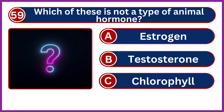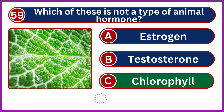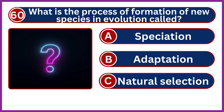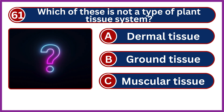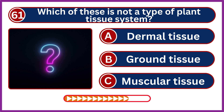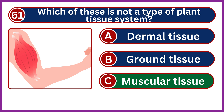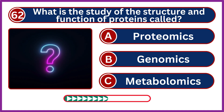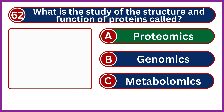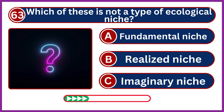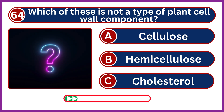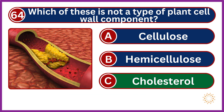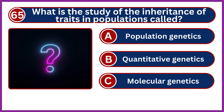Which of these is not a type of animal hormone? Chlorophyll. What is the process of formation of new species in evolution called? Speciation. Which of these is not a type of plant tissue system? Muscular tissue. What is the study of the structure and function of proteins called? Proteomics. Which of these is not a type of ecological niche? Imaginary niche. Which of these is not a type of plant cell wall component? Cholesterol. What is the study of the inheritance of traits in populations called? Population genetics.